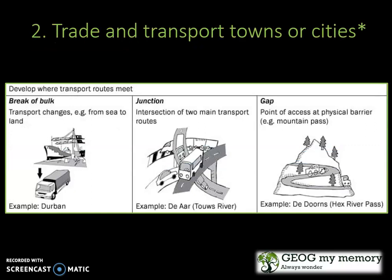Your trade and transport towns or cities develop where your transport routes meet. These include your break of bulk, which are your transport changes, your junction, which is the intersection of two main transport routes, and the gap, which is the point of access at physical barriers.